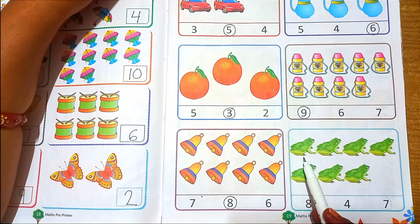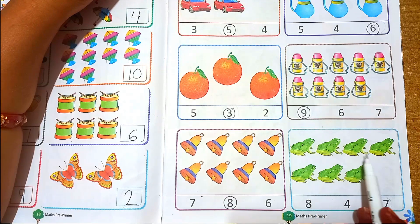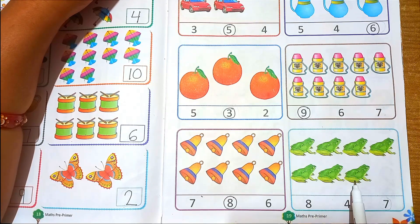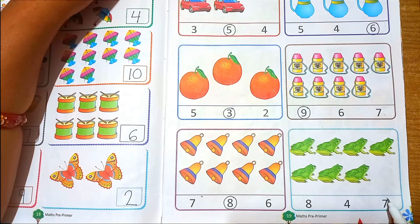Next number is frog. One, two, three, four, five, six, seven frogs. Seven circle.